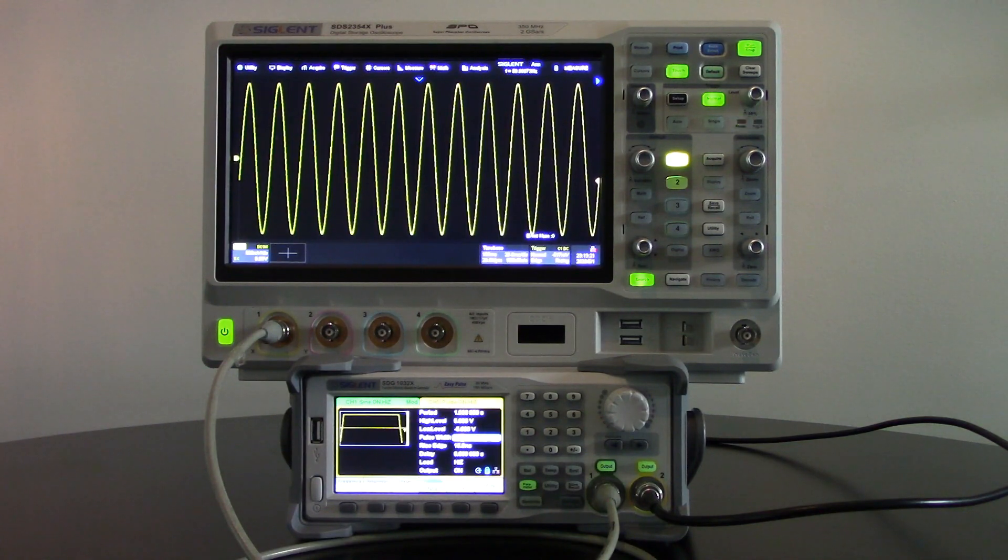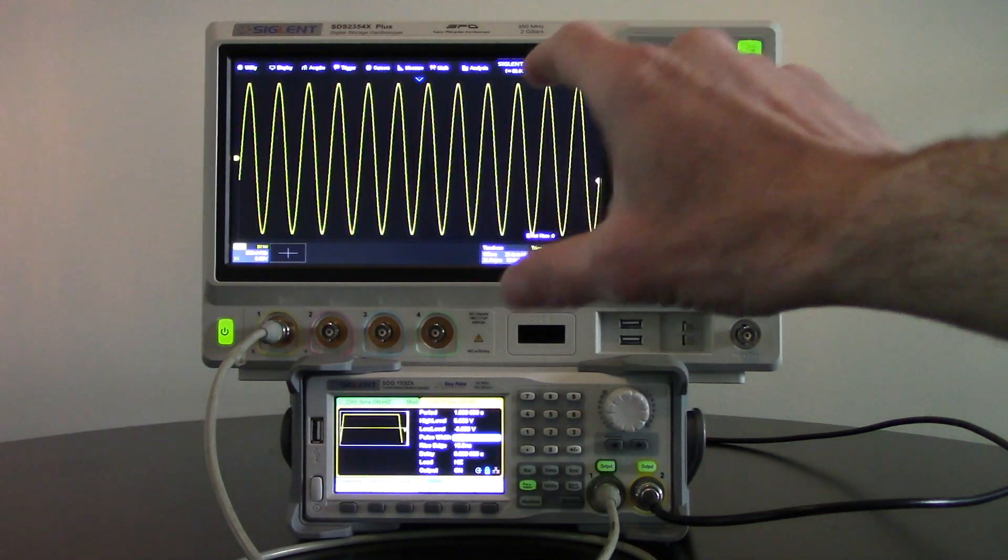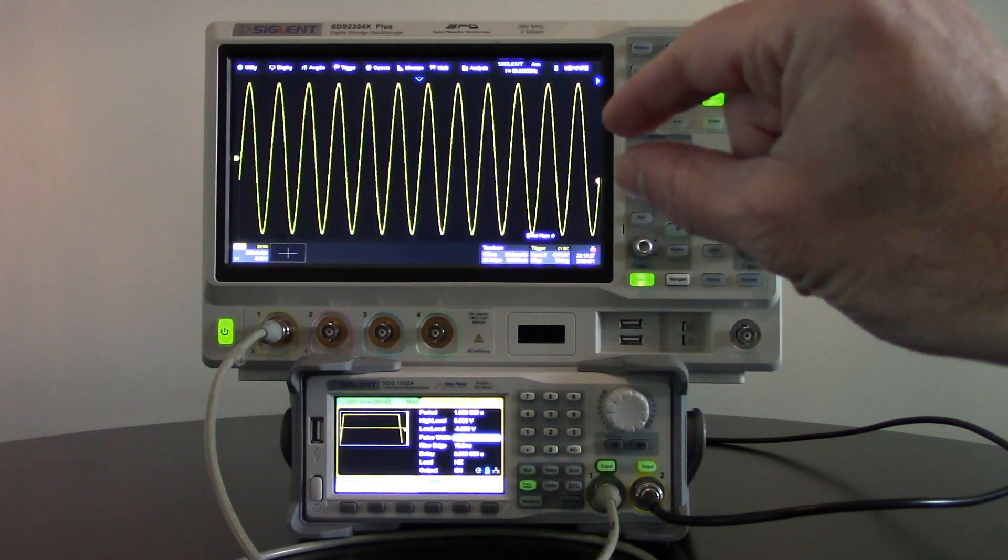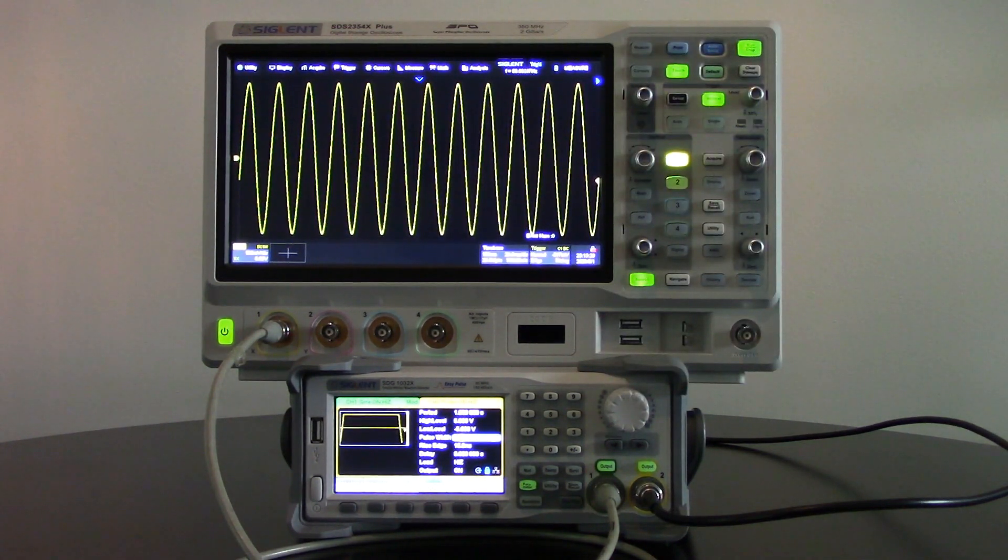In dirty power testing, the sine wave, the voltage coming in, instead of being the max voltage, you actually get dropouts or smaller events that occur. A brownout is another way of putting that.